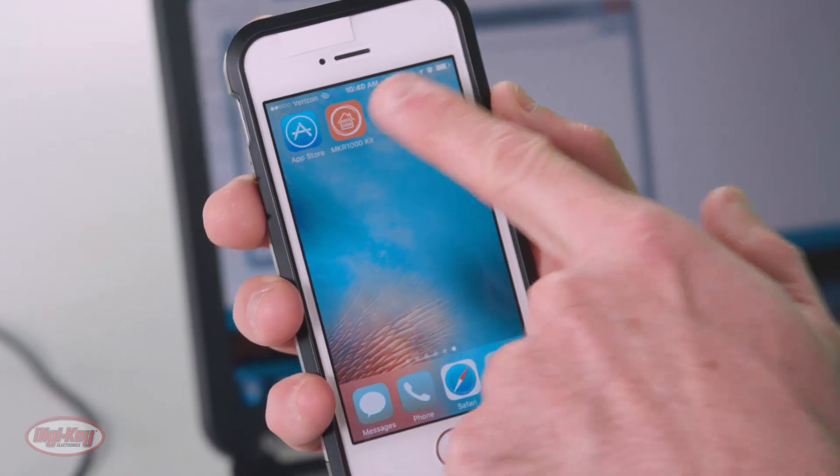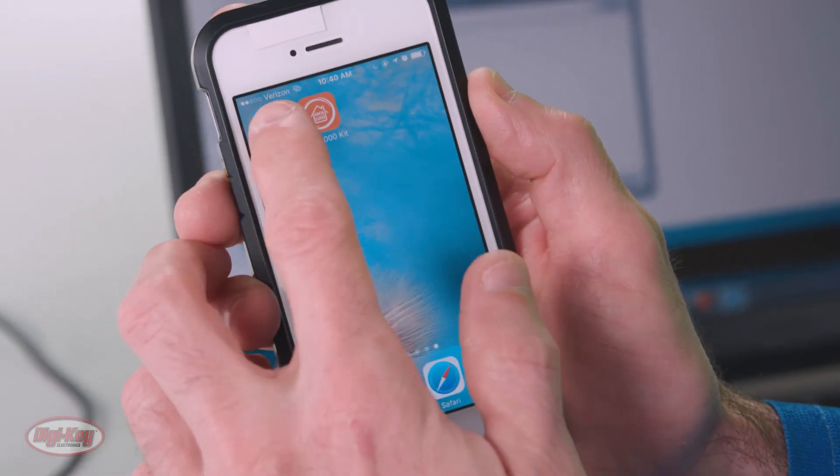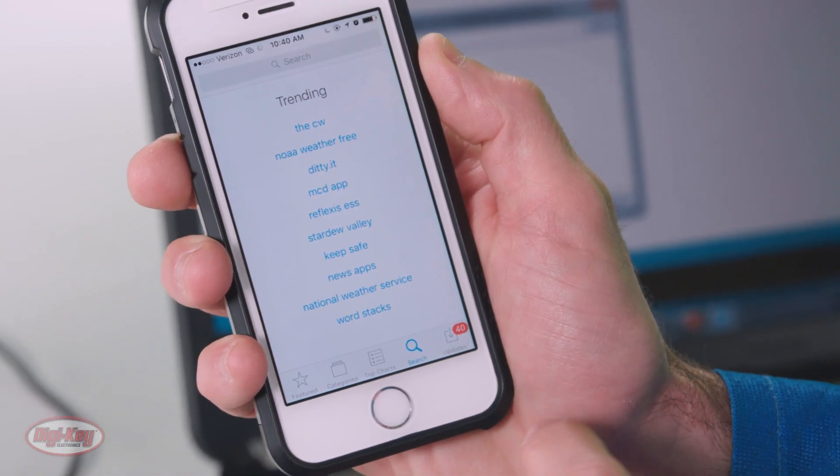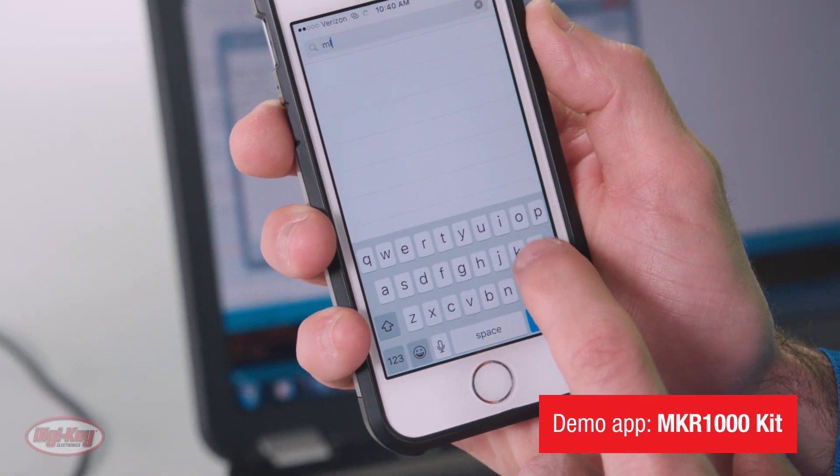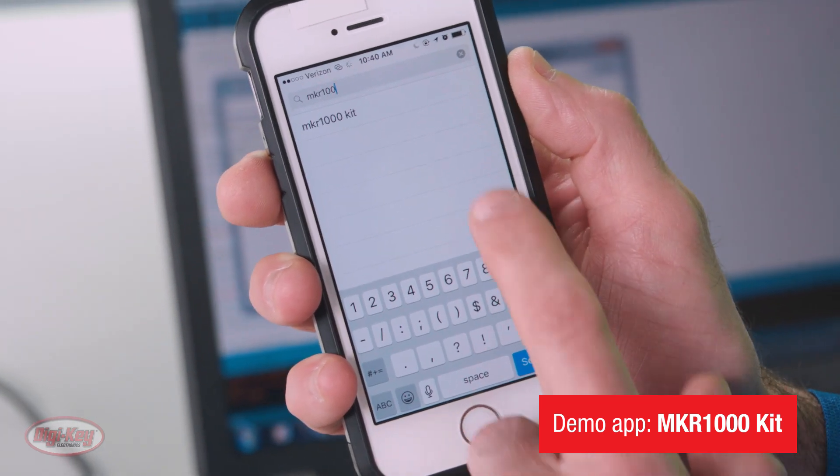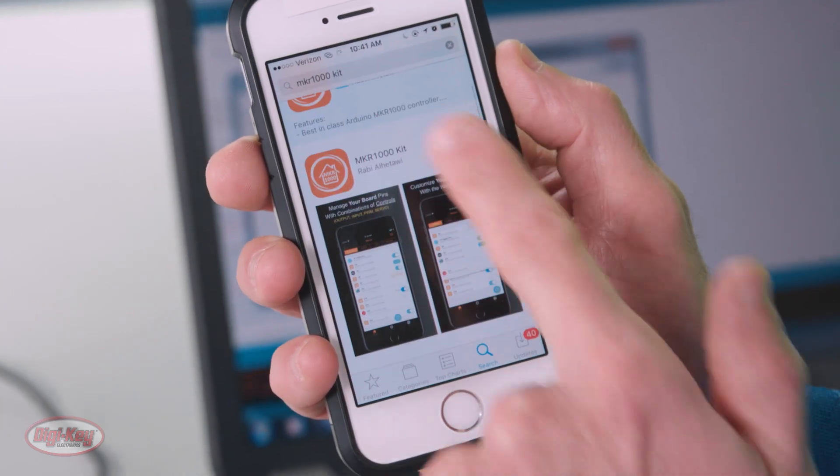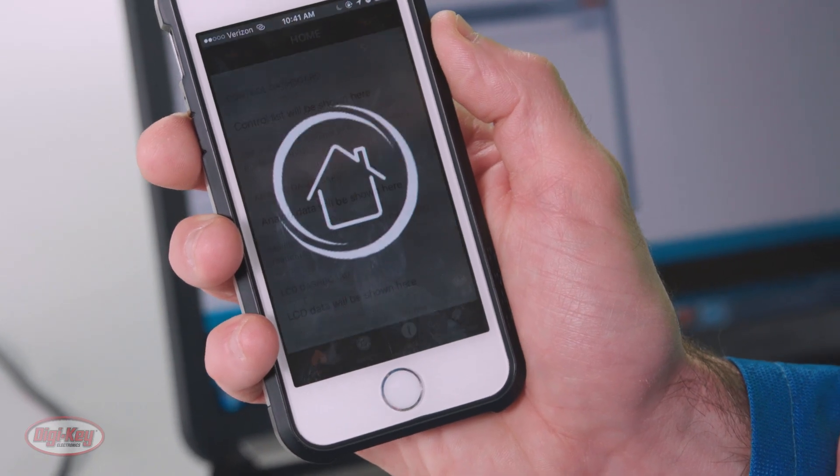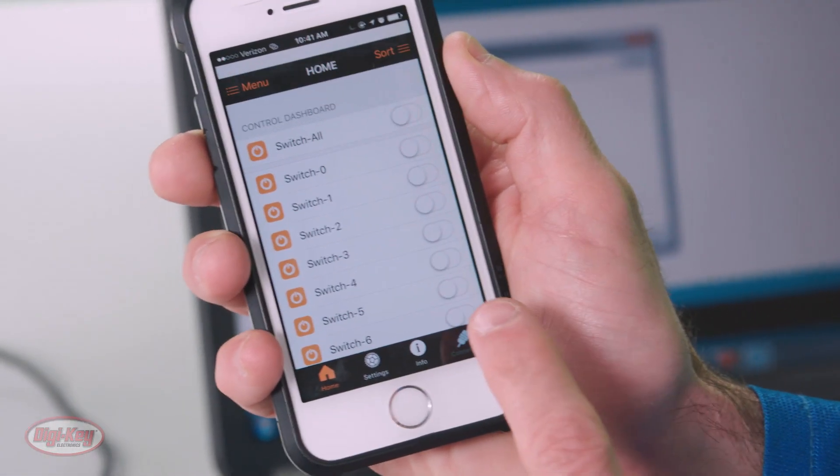I will say I have already downloaded the app. It's the MKR1000 kit there, but I'll just walk you through the process on how to get that. So I'll go to the app store, search MKR1000, right there. And then this is what we want. So I will go ahead and open the app.